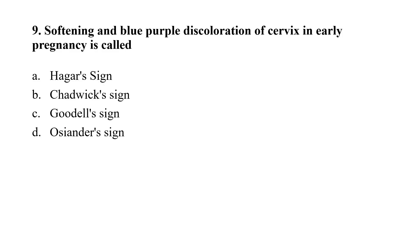Question number 9: Softening and blue-purple discoloration of cervix in early pregnancy is called — option A: Hegar sign; option B: Chadwick sign; option C: Goodell sign; option D: Osiander sign. The correct option is B, that is Chadwick sign.